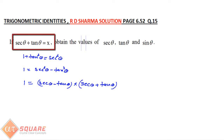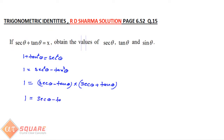Since sec θ + tan θ = x (given), we put that value here. So (sec θ - tan θ) × x = 1, which gives sec θ - tan θ = 1/x. This is our first equation.